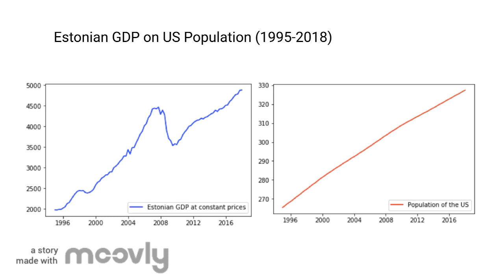For the Estonian GDP, the test returns a Dickey-Fuller statistic of 1.401 and a p-value of 0.95, meaning we cannot reject the null hypothesis that there is a unit root — in other words, it is non-stationary. Similarly, for US population, it returns a Dickey-Fuller statistic of 1.37 and a p-value of 0.96. We can therefore conclude that both series are non-stationary.